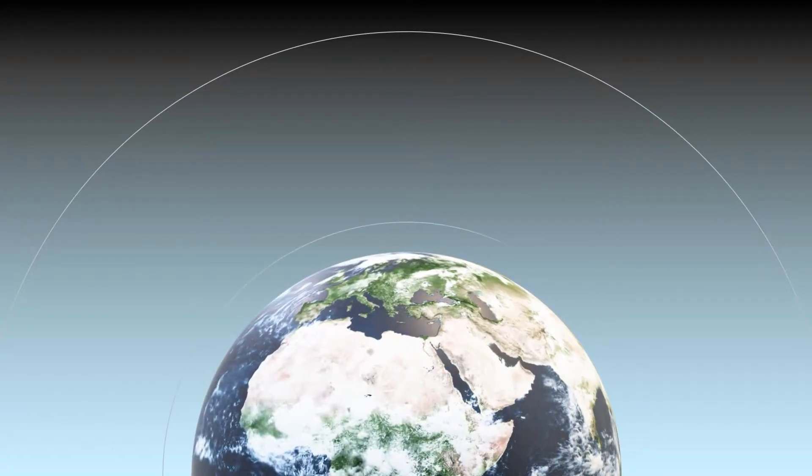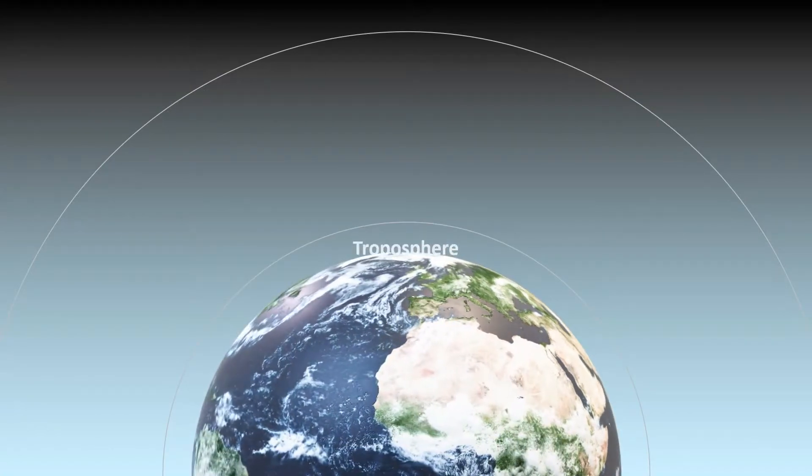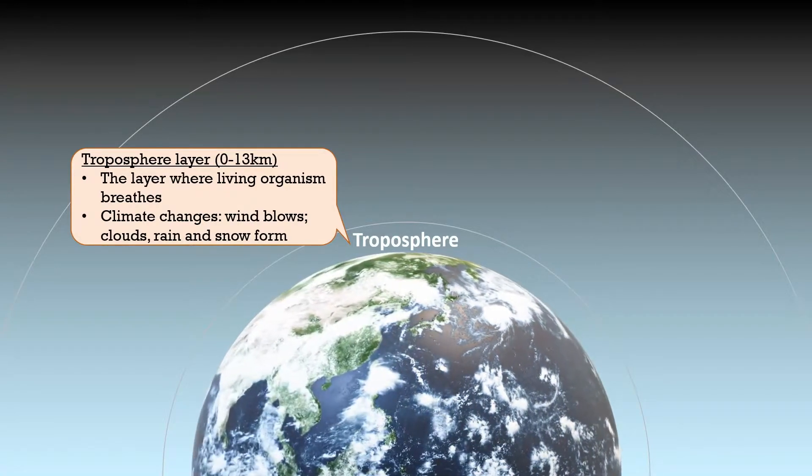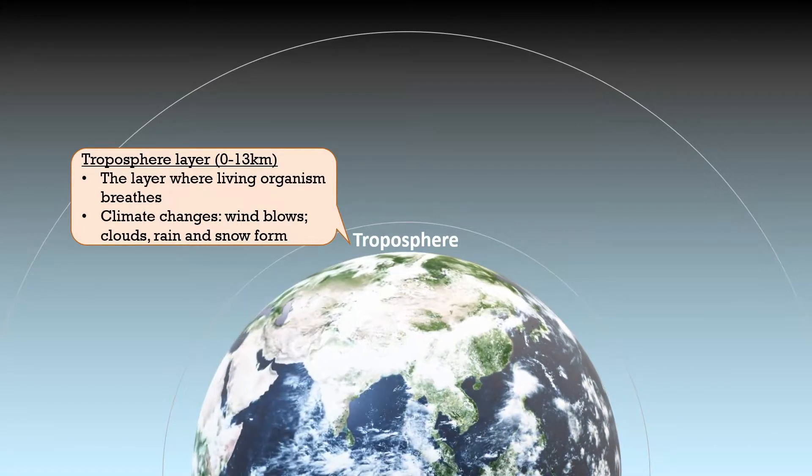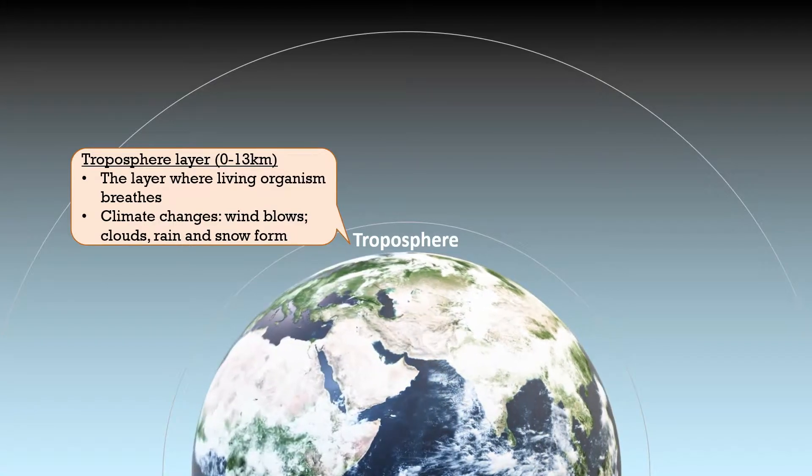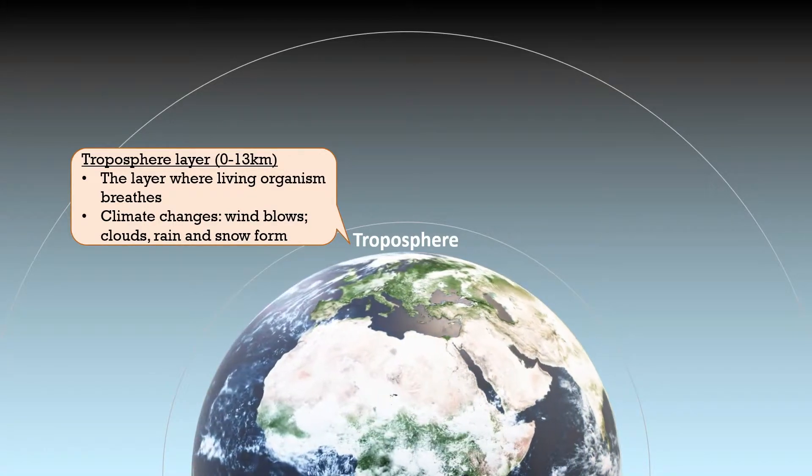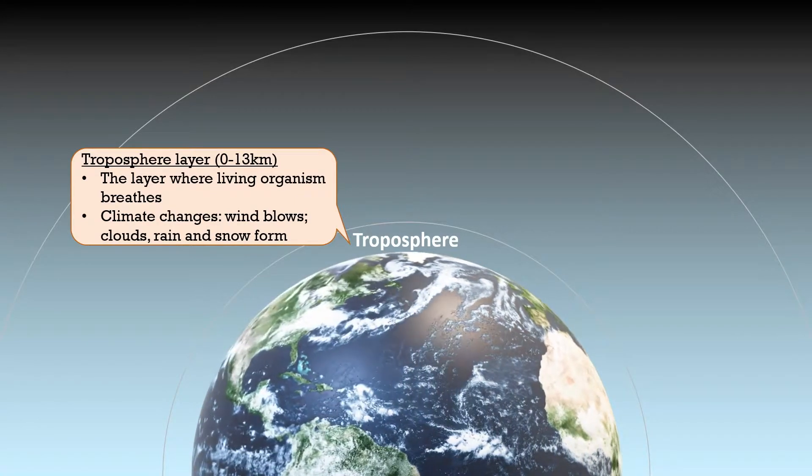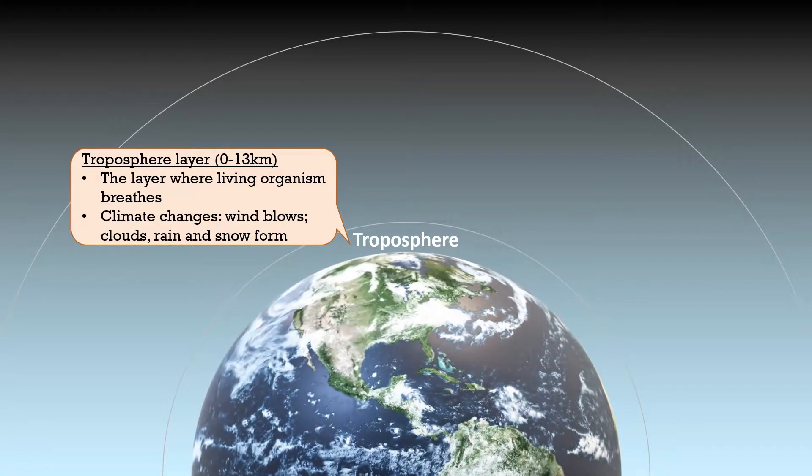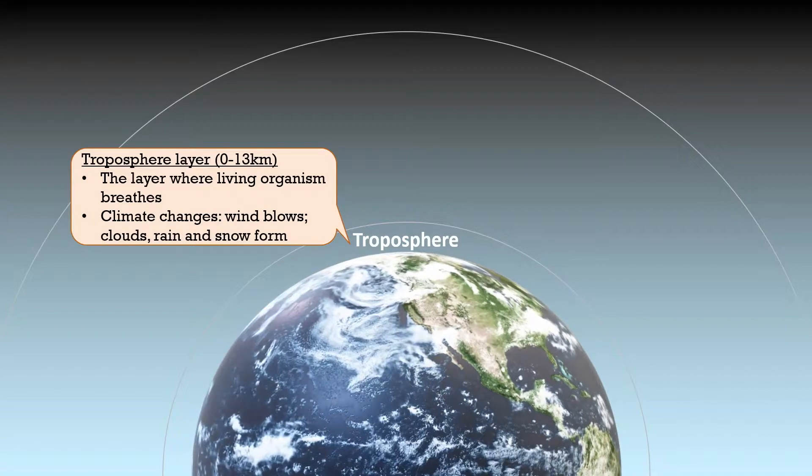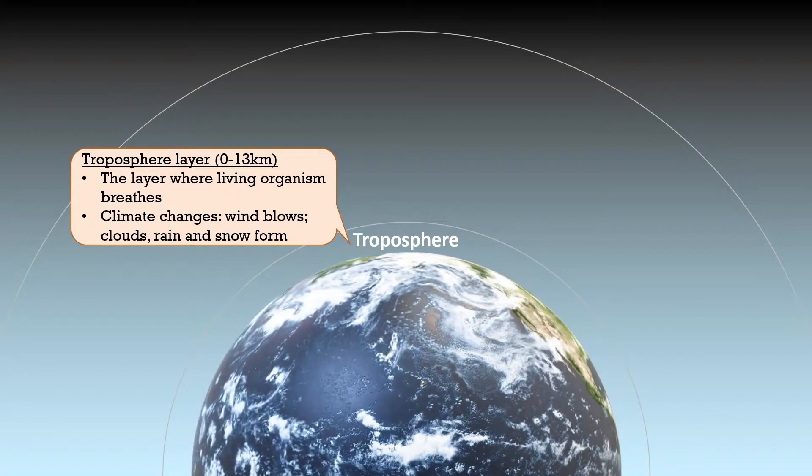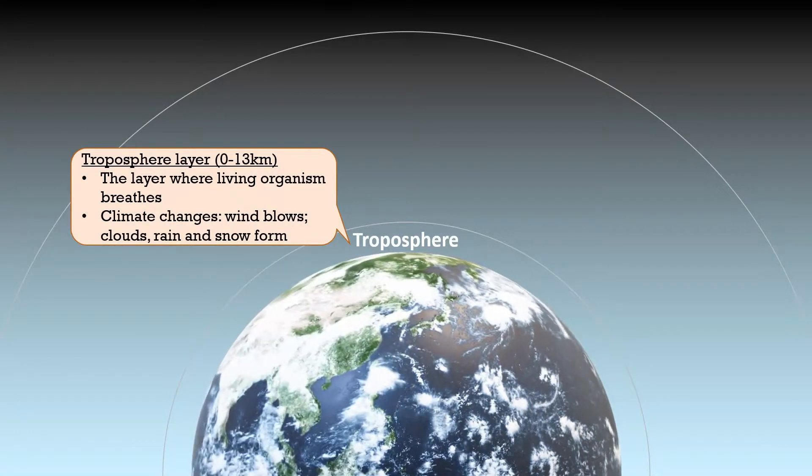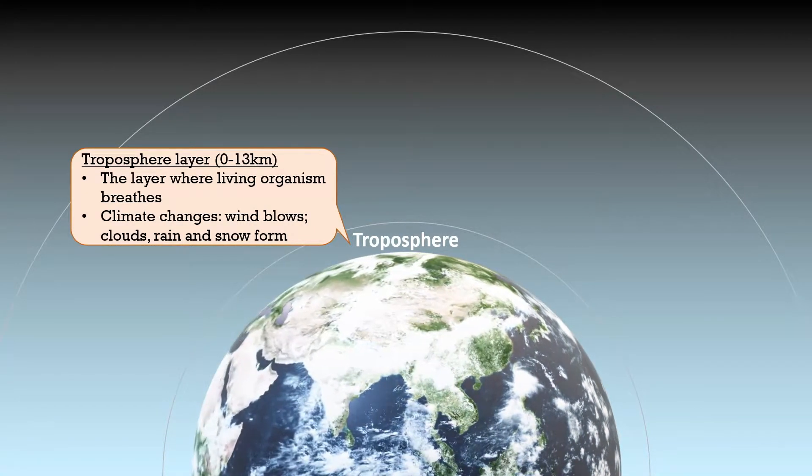The first layer we are going to learn is the troposphere, the layer where we are living in and all living organisms breathe in. This is also the layer where most climate changes occur such as the blowing winds and the formation of clouds. The clouds that you thought are really high up in the sky are actually just around 13 kilometers height. The weather changes that we experience all happen within the troposphere, which brings us to the next layer, stratosphere.